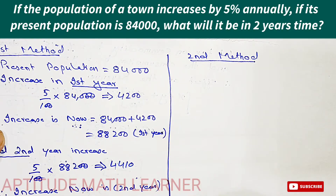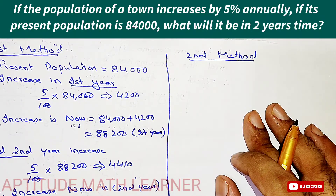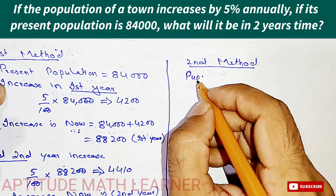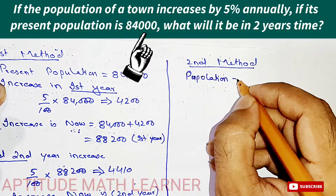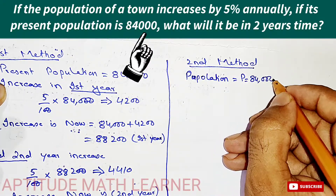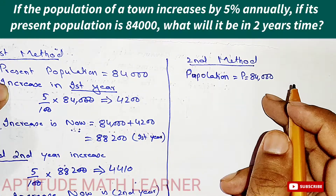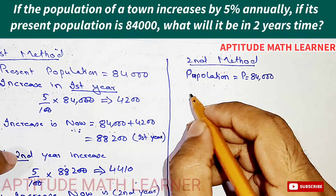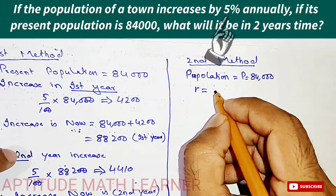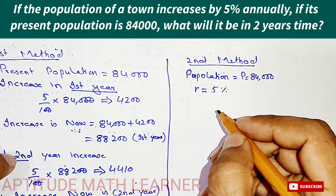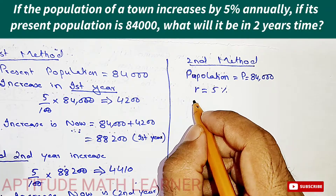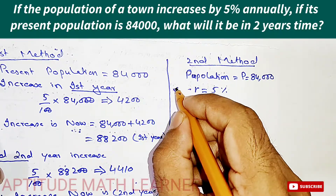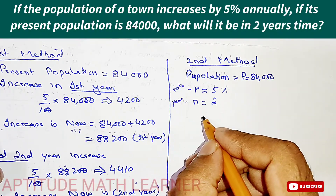Now the second method will help you understand this more conceptually. Here we take P equal to 84,000 as the present population. The rate R is equal to five percent, and the number of years N is equal to two years.